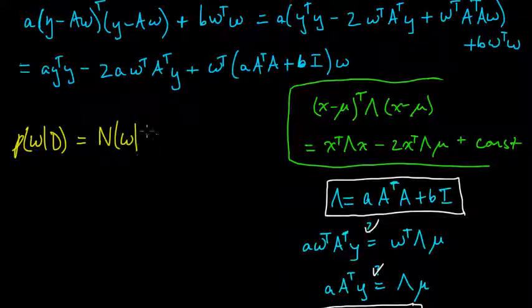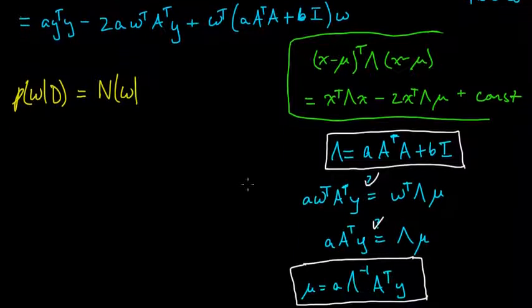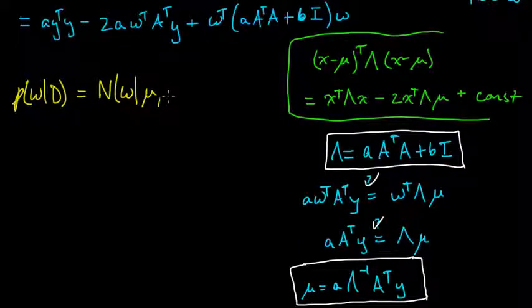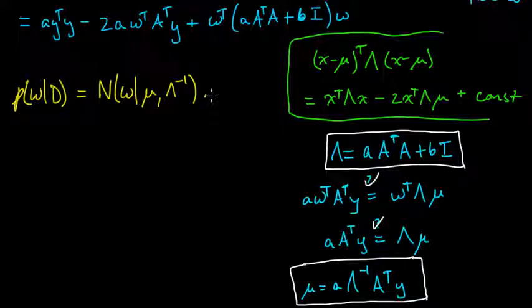the posterior on w given the data is normal. It's a multivariate normal with mean mu and covariance matrix lambda inverse. And that gives us the posterior distribution on w.